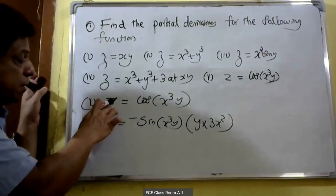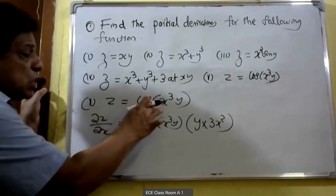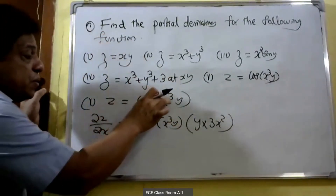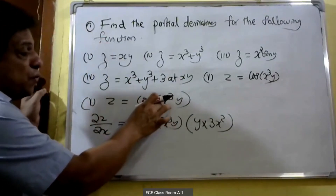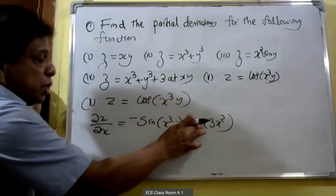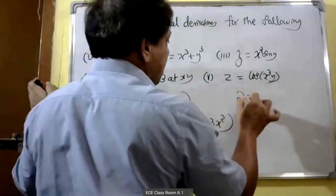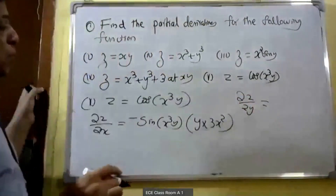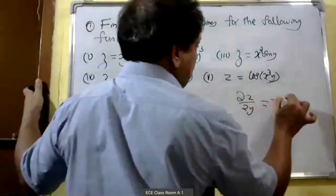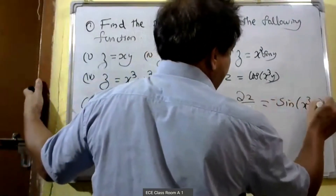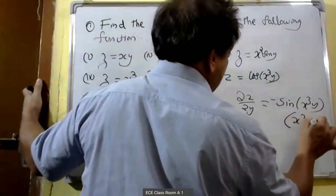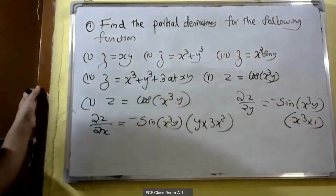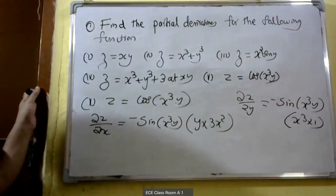For ∂z/∂y of cos(x³y), we get minus sin(x³y) into the derivative of x³y with respect to y. In this case x³ is constant, so derivative of y is equal to 1. Therefore ∂z/∂y is equal to minus sin(x³y) into x³.